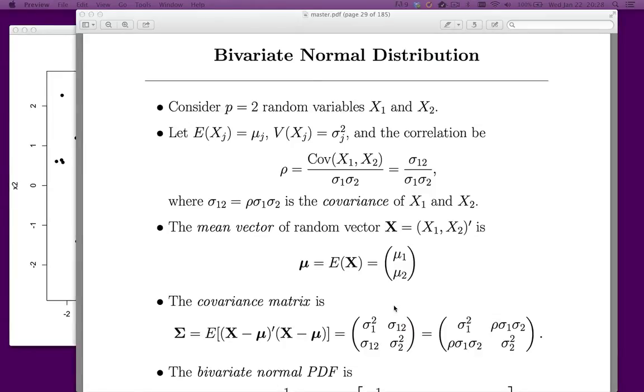We're now going to talk about the bivariate normal distribution. We've been talking about Gaussian mixtures, and up to this point we've only had a single variable that we've observed.